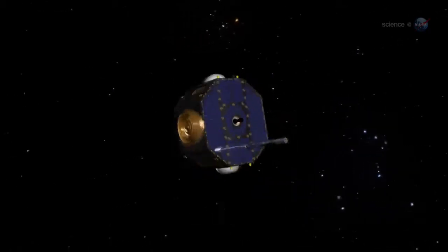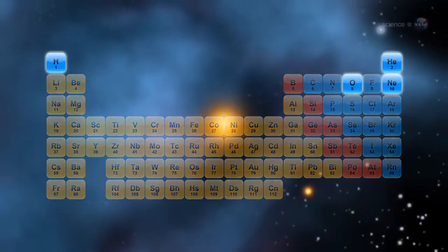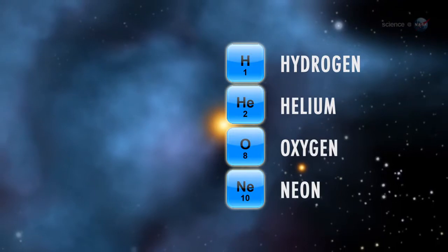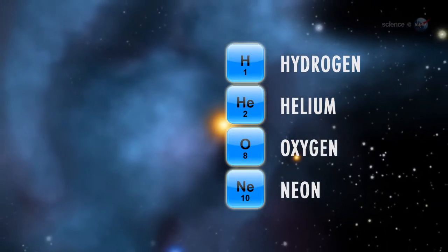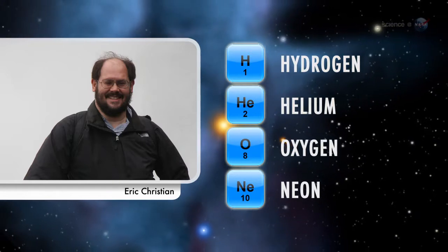The first two years of counting these alien atoms have led to some interesting conclusions. We've directly measured four separate types of atoms from interstellar space, and the composition just doesn't match up with what we see in the solar system, says Eric Christian, mission scientist for IBEX at NASA's Goddard Space Flight Center in Greenbelt, Maryland.